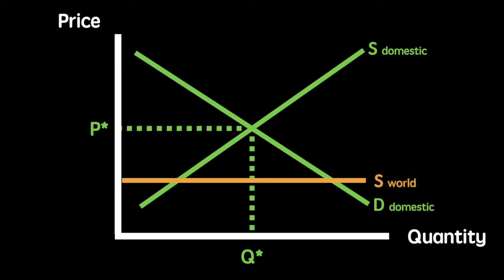Let's now introduce the world supply, which is assumed to be perfectly elastic at a lower than domestic equilibrium price. Our world suppliers can provide this good or service at a price of PW. Given this, domestic suppliers supply the market until Q1 is reached, and the quantity from Q1 to Q2 is provided by foreign firms.